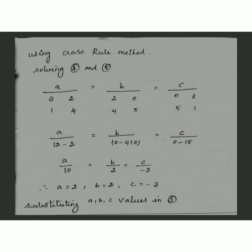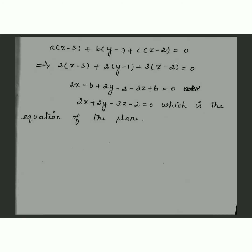Substitute these values into equation 3, which is a(x − 3) + b(y − 1) + c(z − 2) = 0. Substituting a = 2, b = 2, c = −3 and simplifying, you get 2x + 2y − 3z − 2 = 0, which is the required equation of the plane.